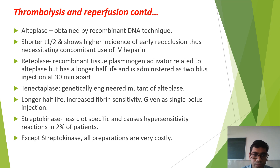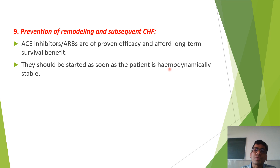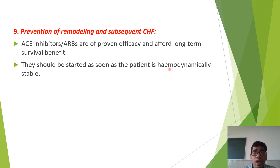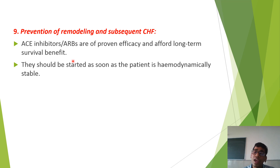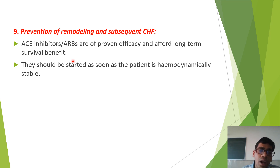Prevention of remodeling and subsequent CHF: if cardiac hypertrophy, left ventricular hypertrophy, or congestive heart failure is present, ACE inhibitors or ARBs are of proven efficacy and afford long-term survival benefit. They are given during hospital stay — IV if required — and continued orally for the long term to prevent remodeling and left ventricular hypertrophy. They should be started as soon as the patient is hemodynamically stable.